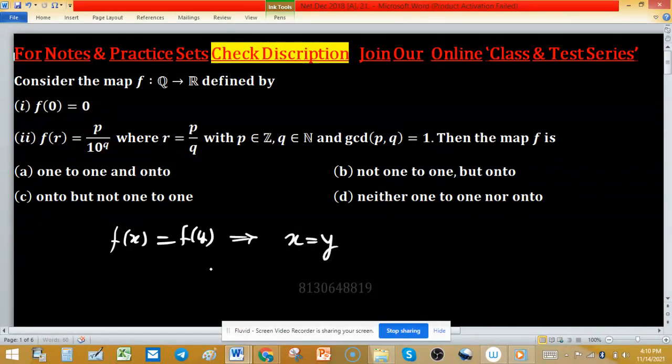And for onto we can use the cardinality concept, which says if cardinality of domain is strictly less than cardinality of codomain, then function cannot be onto. So we will use these two concepts here to answer this question.